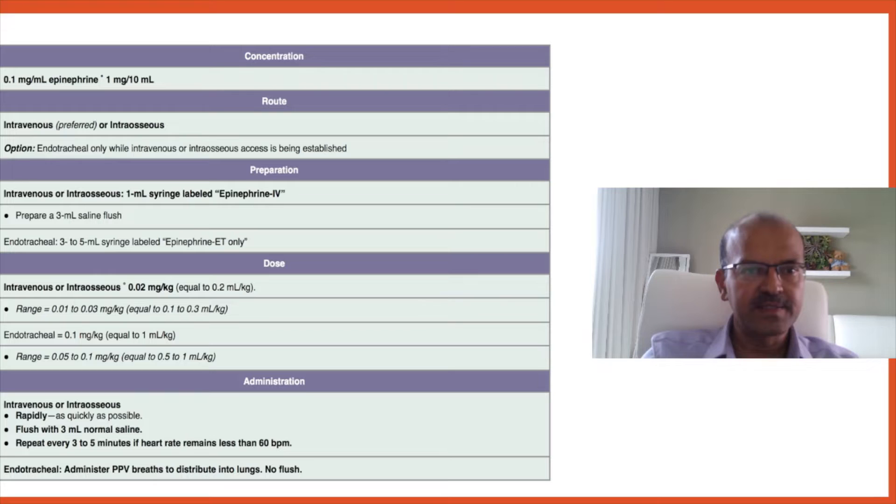The first assessment after the UVC is in—if the heart rate is still low even if it's just 1 or 2 minutes after the ET dose—you can give the IV dose as the first dose and then start the 3 to 5 minute cycle. For endotracheal administration, administer PPV after the dose to distribute it into the lungs. There is no flush.